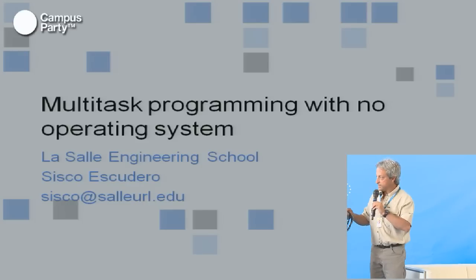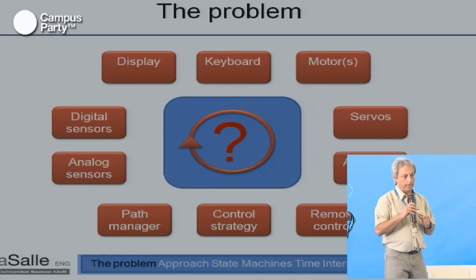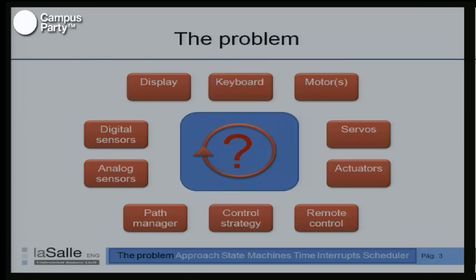The aim is to deal with that problem. Imagine a robot — a robot is the perfect example of a control system. In a robot, we have to deal with a lot of tasks simultaneously. For example, we have to send energy to the motors, control servos, attend to a keyboard, refresh a display, and catch information from digital and analog sensors. These analog sensors need to be filtered.